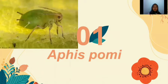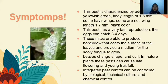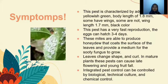First is Aphis pomi. The pest is characterized by a yellowish-green body with a length of 1.8 millimeters. Some have wings with wing length above 1.7 millimeters, and some do not. This pest has very fast reproduction; the eggs can hatch in 3 until 4 days. These mites are able to produce honeydew that coats the surface of the leaf, providing a medium for sooty fungus to grow. Leaves change shape and curl. In mature plants, this pest can cause leaf flowering and young fruit fall. Integrated pest control can be done by biological, technical culture, and chemical control.